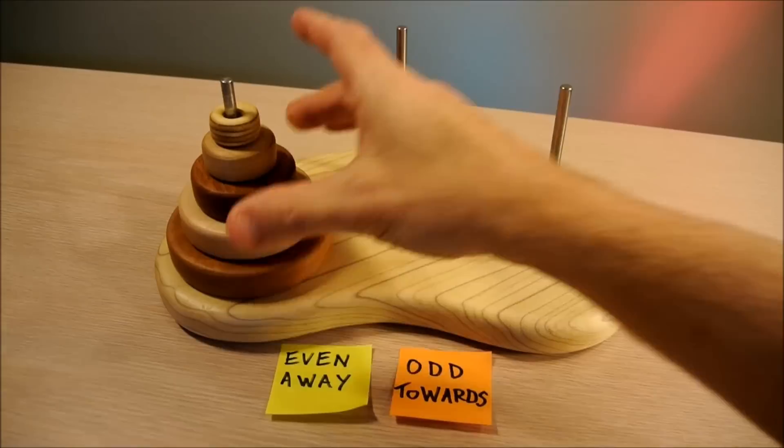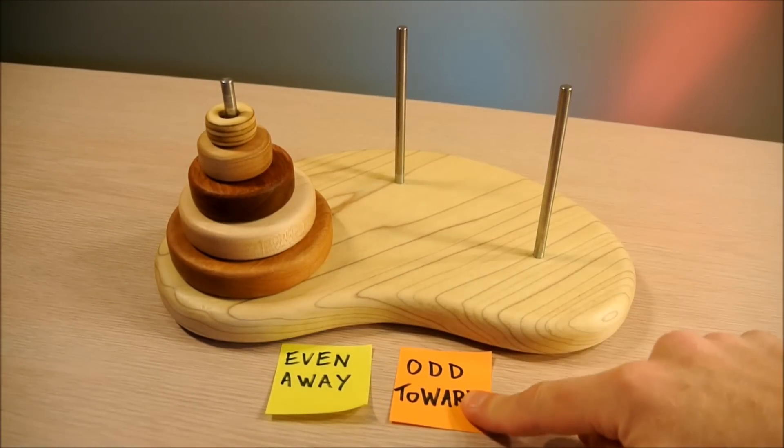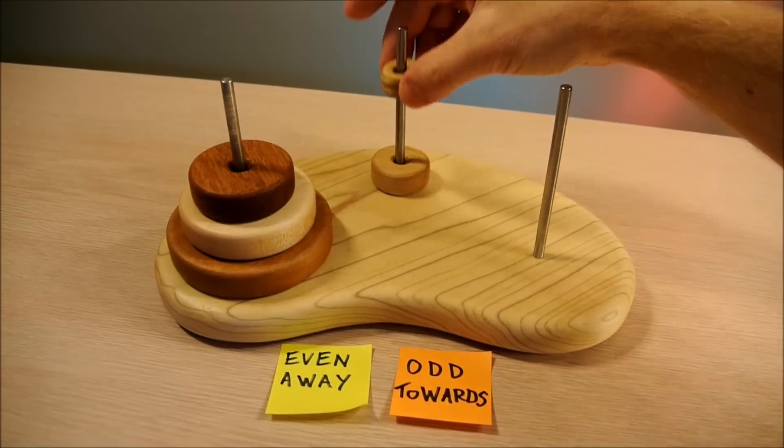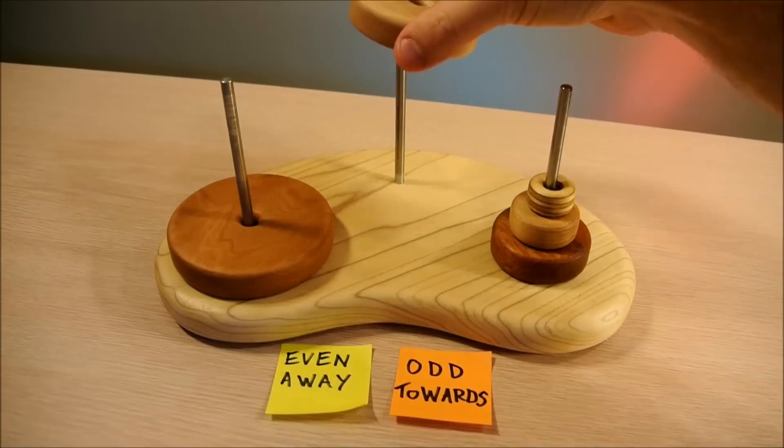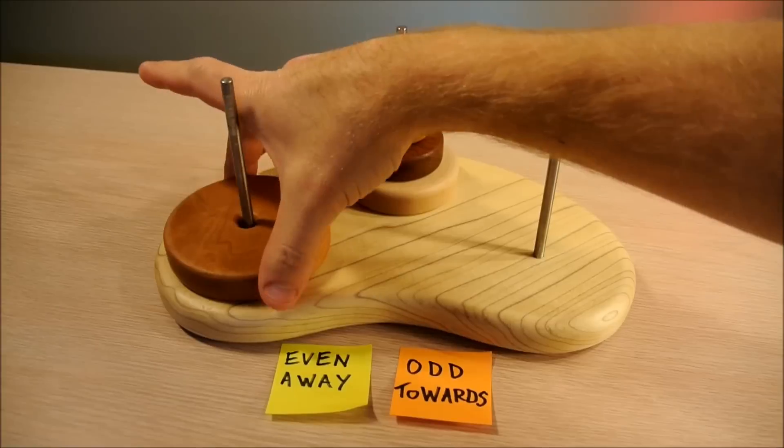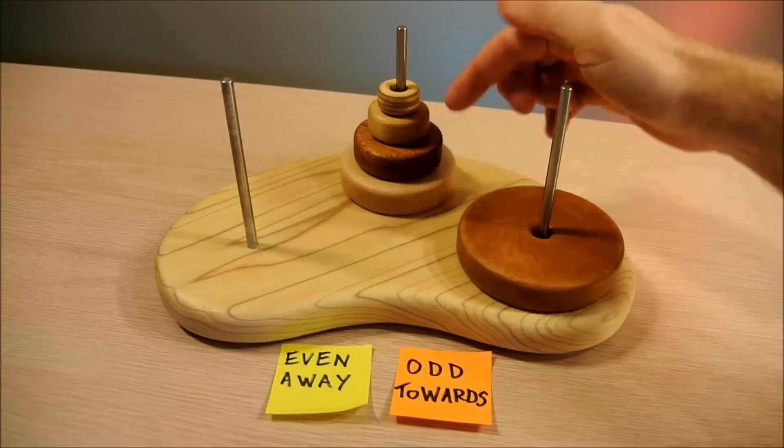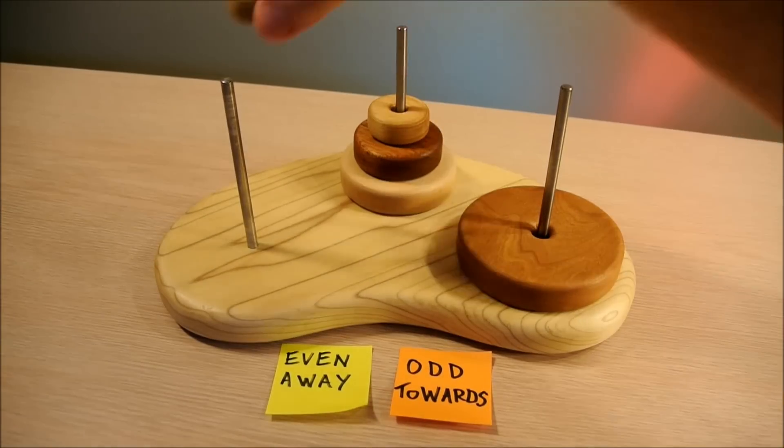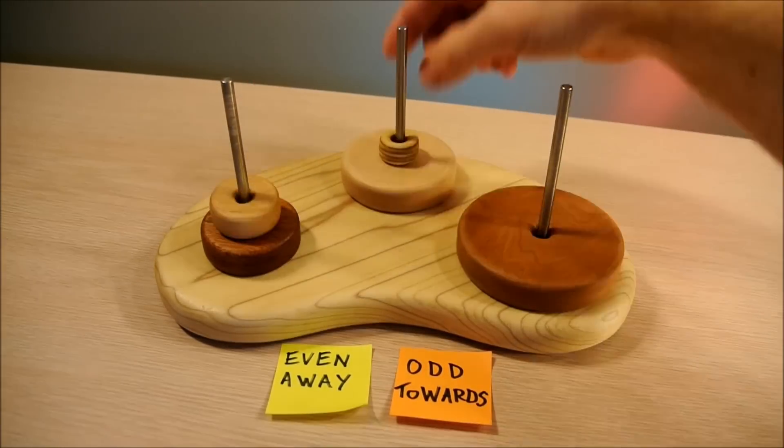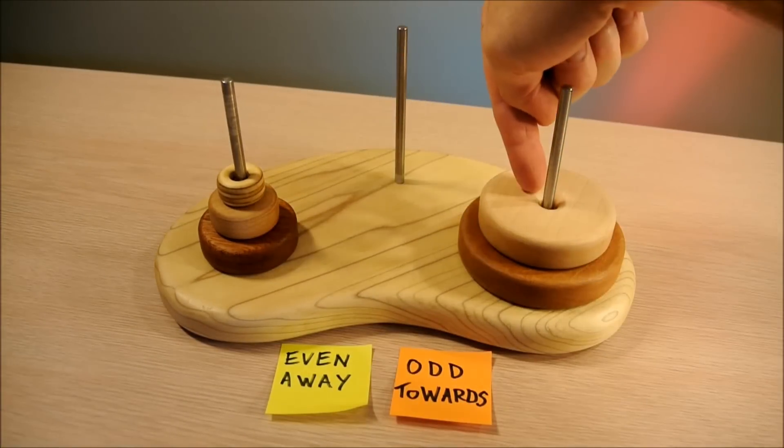To keep this video from becoming too tedious, I'll have to speed up the footage for five pieces. But notice the pattern: odd towards. We have an even number remaining. I'm going to move away from my goal. Odd number remaining, towards the goal.